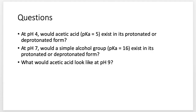A couple of typical exam questions: At a pH of 4, would acetic acid with a pKa of 5 exist in its protonated or deprotonated form? Now that you know what pKa means compared to pH, you should be able to answer that. What about at pH 7 — would a simple alcohol group with a pKa of 16 exist in its protonated or deprotonated form? Or if I showed you an acetic acid and said what would it look like at a pH of 9? You need to know whether it has that proton attached or not.